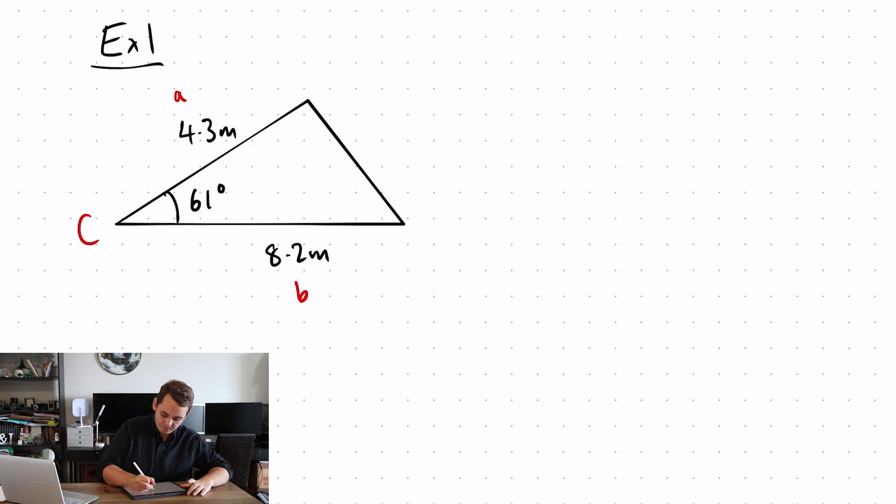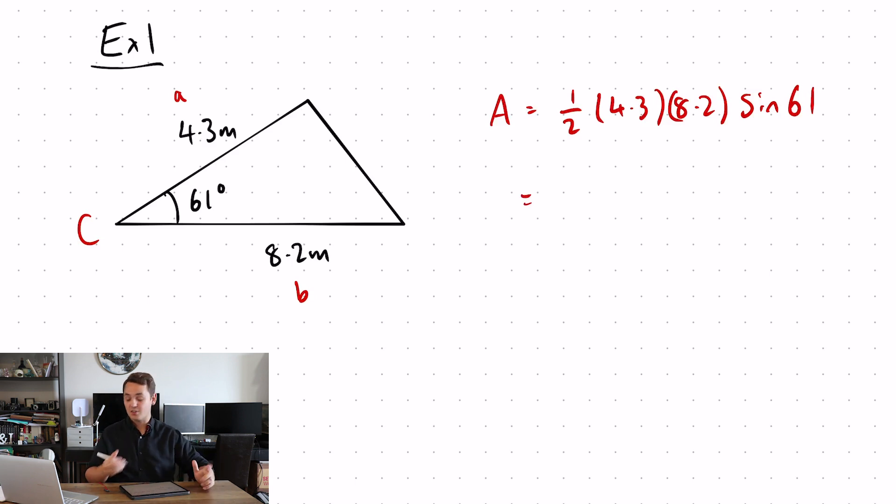Using my formula, half 4.3, 8.2, sine 61. Type it into a calculator and it's going to give me the area of a triangle as 15.4 meters squared.